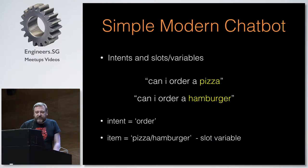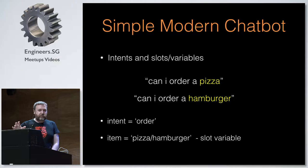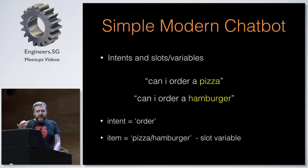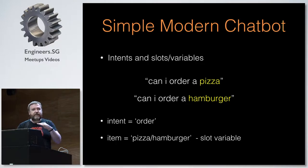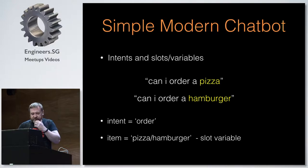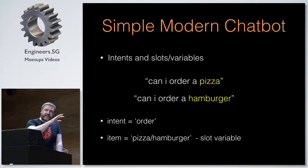So how do these things work? Generally, the most simple modern chatbots work on what I call an intent and slot system, or an intent and variable system. Basically, everything you say to it, it's looking for the intent of what you said and then it's looking for the variables that fit into that intent. For example: 'Can I order a pizza?' and 'Can I order a hamburger?' are the exact same intent — it's just the slot or variable that's changed.